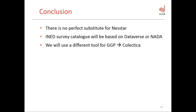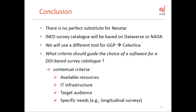In general, to answer the question 'what criteria should guide the choice of software for a DDI-based survey catalog?', I would say mainly contextual and subjective criteria depending on: the available resources, the institutional IT infrastructure, the target audience, and whether there are specific needs — which may be different for longitudinal surveys. And this is it.